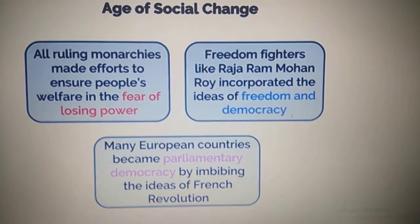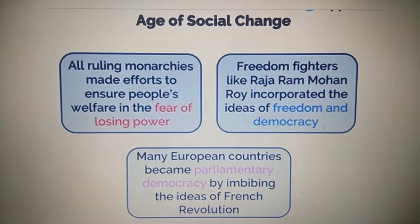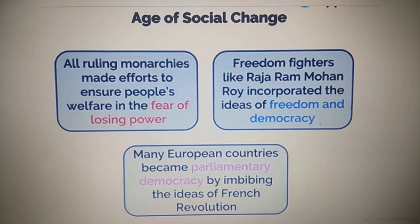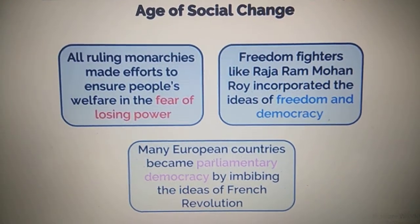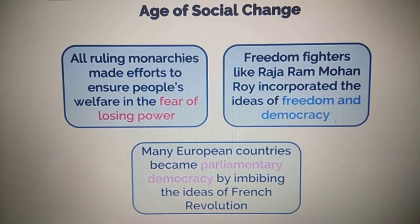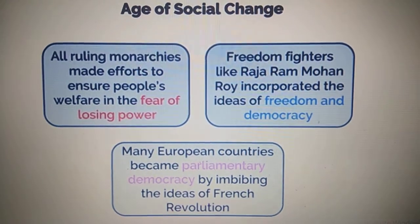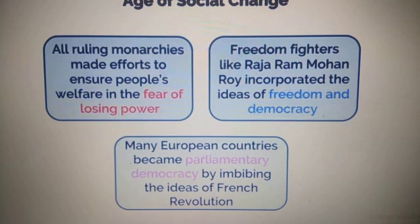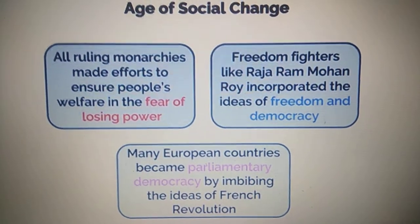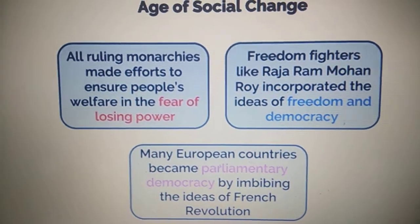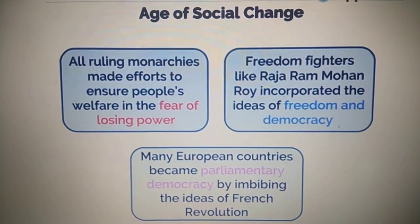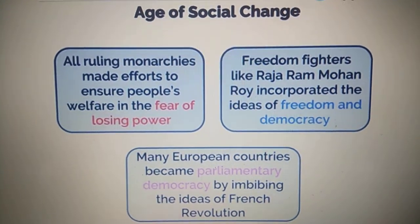After the French Revolution, the age of social change was coming in. All ruling monarchies all over the world, who were ruled by kings and queens, now made sure they would work for the welfare of the people — because they knew that if they don't work for the people, they will be overthrown. Even in India, freedom fighters like Raja Ram Mohan Roy learned about the ideas of freedom and democracy, and many European countries also wanted parliamentary democracy.